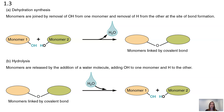Monomers are joined by the removal of the hydroxyl group of one monomer and the removal of a hydrogen from the other at the site of bond formation, as you can see in that diagram. The OH is removed from one and an H from the other, making up that H2O. After the process, you're left with one molecule linked by a covalent bond instead of two separate monomers. If just two components are built together, you can call that a dimer. Continue this process adding more monomers and it eventually becomes a polymer.